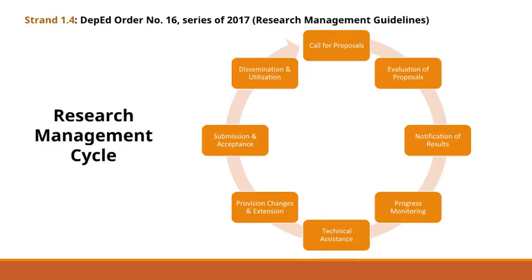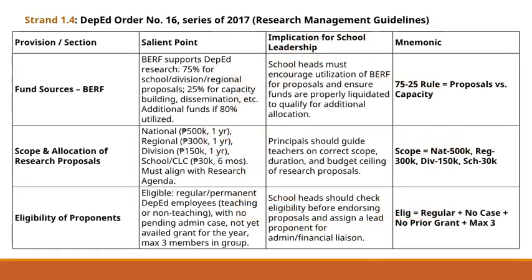The research management cycle begins with the call for proposals, inviting school-based and division research. Proposals are then evaluated, followed by the official notification of results. Once approved, progress is closely monitored with technical assistance provided when needed. Any necessary changes or extensions must be formally requested and approved. Completed studies go through submission and acceptance before the final stage of dissemination and utilization, where research findings inform teaching, learning, and governance. This cycle ensures that research is systematic, accountable, and impactful across all levels of DepEd.